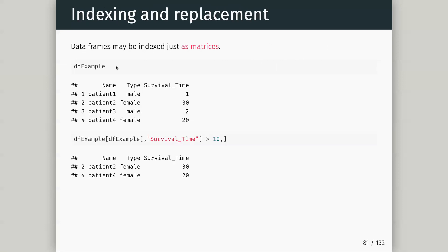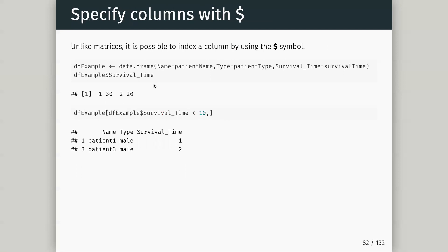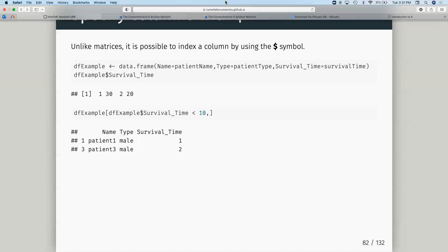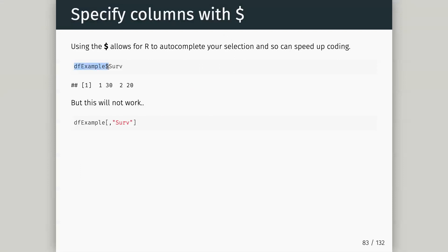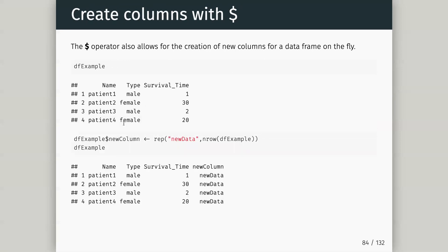What's really cool about the dollar sign is that R will allow some level of auto-completion. As long as what comes after the dollar is enough to uniquely identify a column, it's going to pull out that column. So if I do df_example dollar s, there's only one column starting with s so it works. In RStudio the interactive session will fill in the rest of the name for you.